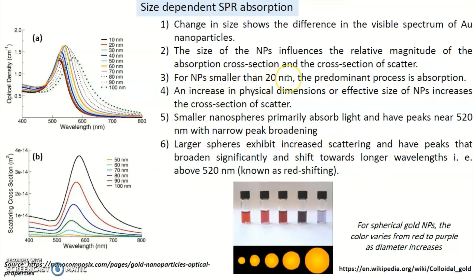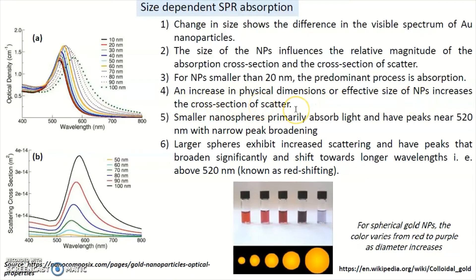For nanoparticles smaller than 20 nanometers, the predominant process is absorption. When the gold nanoparticles are below 20 nanometers, absorption is dominant. There is a lot of absorption taking place and because the nanoparticles are much smaller in size, they absorb light and show beautiful colors.